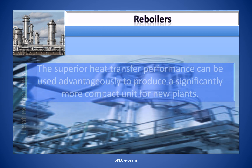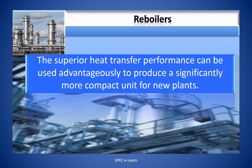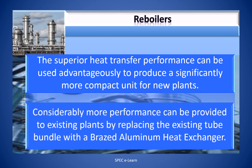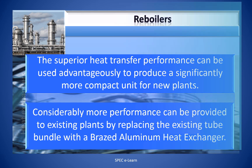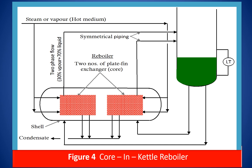The superior heat transfer performance can be used advantageously to produce a significantly more compact unit for new plants. Considerably more performance can be provided to existing plants by replacing the existing tube bundle with a brazed aluminum heat exchanger. The warm stream fluid, which is usually steam, enters the brazed aluminum heat exchanger through steel nozzles on the vessel shell. The inlet nozzles of the heat exchanger are connected to the inlet pipes coming from the column bottom by aluminum to stainless steel transition couplings.